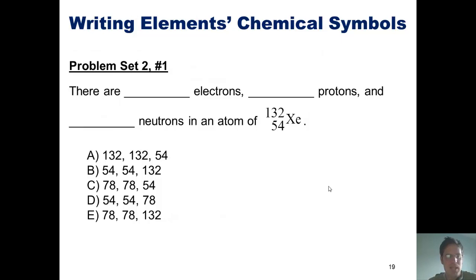From our problem set, we read, there are blank electrons, blank protons, and blank neutrons in an atom of xenon-132.